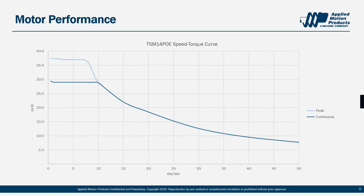Regarding motor performance, this slide shows the speed-torque curve for the motor. The torque available allows it to be used in place of any small step motor up to and including NEMA 14 frame size. Because of its closed loop performance, it can also replace some smaller NEMA 17 frame motors, especially those being controlled open loop. Like any step motor, torque drops off as speed increases. Unlike conventional open-loop step motors, the closed loop TSM-14 provides full continuous torque (dark blue line) plus an additional peak torque range at the low end (light blue line), which generally translates to faster acceleration and deceleration.